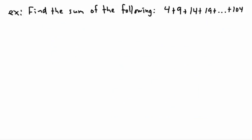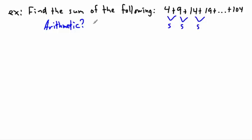And now a more difficult example. Here we're told to find the sum of the following: 4 plus 9 plus 14 plus 19 plus dot dot dot plus 104. It helps first to check — is it arithmetic? The difference between 4 and 9 is 5. The difference between 9 and 14 is 5. The difference between the next terms is also 5. So yes, it's arithmetic. I know that u₁ equals 4 and d equals 5.